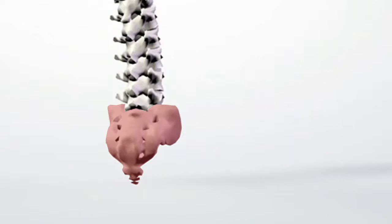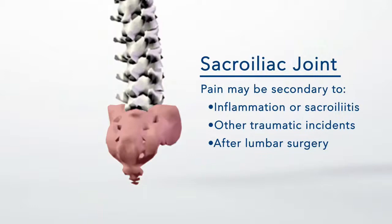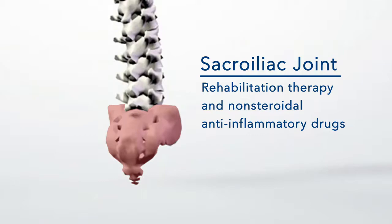It is not clear why and how sacroiliac joint dysfunction occurs. Sacroiliac joint pain typically results in pain on one side, very low in the back, in the buttocks, in the groin, in the hip, or in the lower extremity. Sacroiliac joint pain may be secondary to inflammation or sacroiliitis, or other traumatic incidents, or after lumbar surgery.